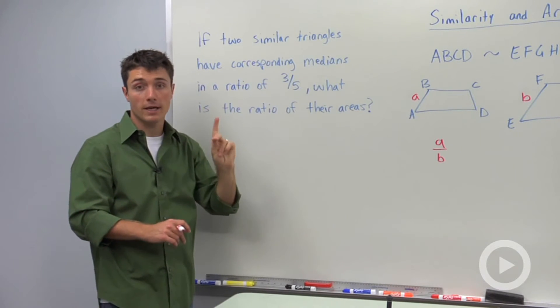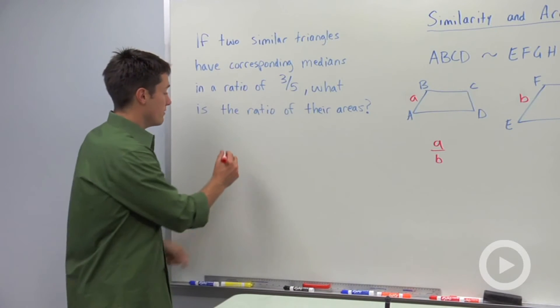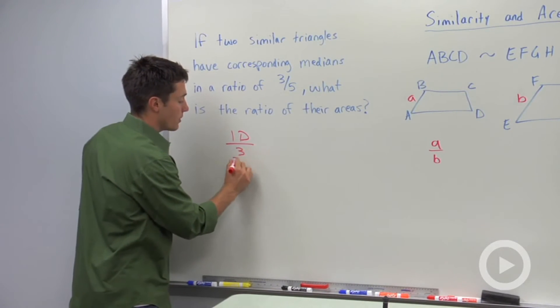Median is a one dimensional attribute of this triangle, it's a distance. So this ratio of three to five, I can write under the category of one dimensional.